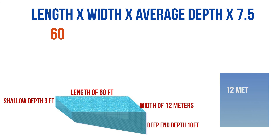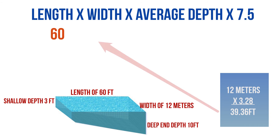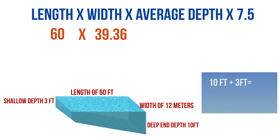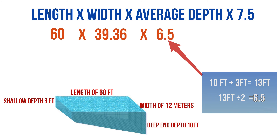12 meters times 3.28 will give us the equivalent in feet. Using a calculator, that gives us 39.36 feet, which we'll use as our width. Next, our average depth equals 10 plus 3 divided by 2, which is 13 divided by 2, giving us an average depth of 6.5 feet. So 6.5 goes into the formula for average depth.